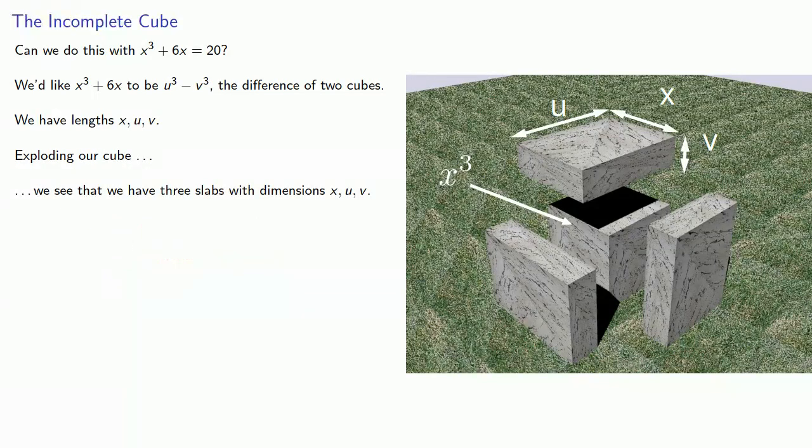And so we need 6x to equal 3uv, and this gives us uv equals 2.